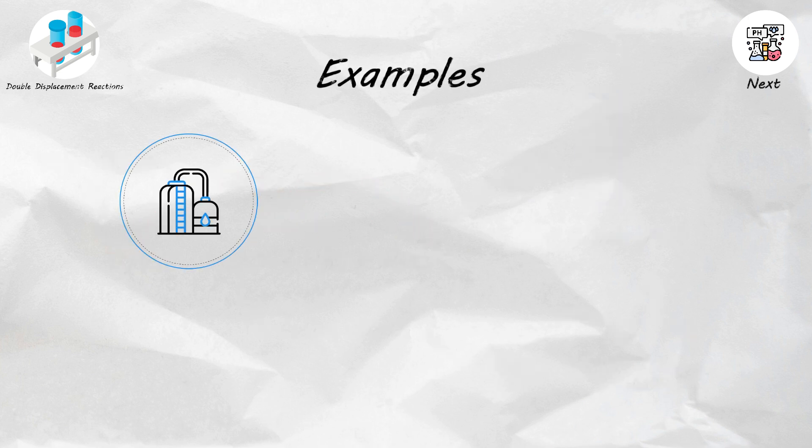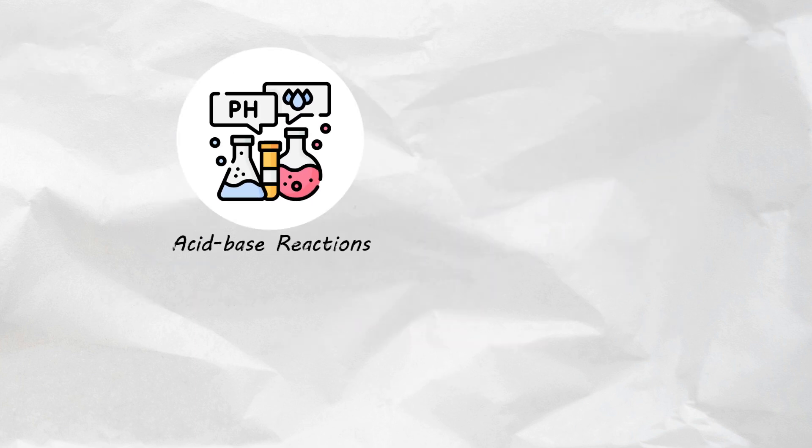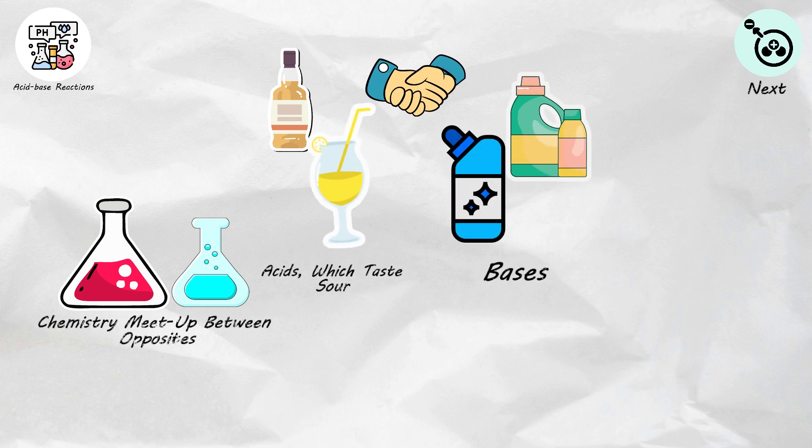These reactions are involved in processes such as water softening, metal plating, and salt formation. Acid-base reactions. Think of acid-base reactions like a chemistry meetup between opposites. Acids, which taste sour like vinegar or lemon juice, team up with bases, often found in cleaning supplies like bleach or detergent.